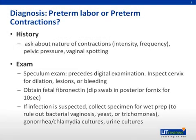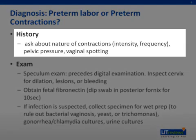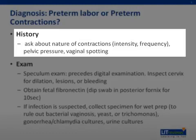Imagine that you are in the labor and delivery unit of your hospital, and a woman presents to you at 33 weeks of gestation complaining of crampy contraction pains. You immediately think of preterm labor versus preterm contractions. How will you go about evaluating this patient further? First, you must start with the history. You ask about the nature of the contractions, namely the intensity and the frequency, and when the contractions started. Remember, labor contractions become increasingly painful over time and occur with a rhythmic regularity at least every five minutes. You also ask about any spotting of blood or bloody mucus on her undergarments, otherwise known as bloody show, which is related to cervical softening and effacement.